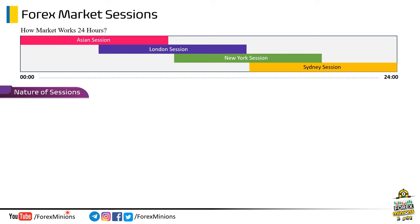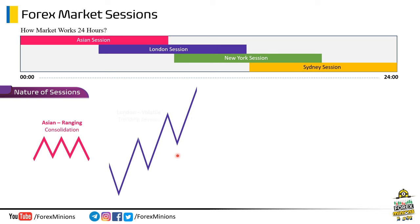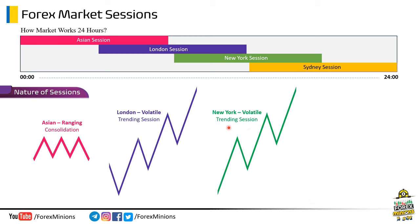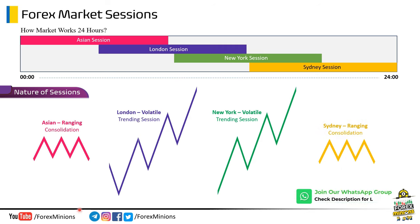Now let's talk about the nature of Forex trading sessions. When the market actually starts, it is ranging or consolidating — this behavior is mostly observed in the Asian session. After the Asian session, the Forex market starts trending, which mostly occurs in the London session, which is much more volatile than the Asian session. This trending or volatile nature continues in the New York trading session. Note that the New York session is highly volatile for major or USD pairs. Finally, at the end of the day, the market again starts ranging, which usually happens in the Sydney session. So the Asian session builds liquidity because of its consolidating nature, while London and New York sessions are mostly trending sessions due to high trade volumes.